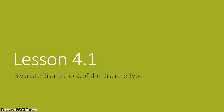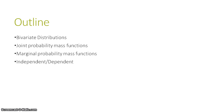Welcome to lesson 4.1 on bivariate distributions of the discrete type. In this video, we will learn about what a bivariate distribution is and why it's important. We will discuss joint probability mass functions, marginal probability mass functions, and review the idea of events and random variables being independent or dependent.